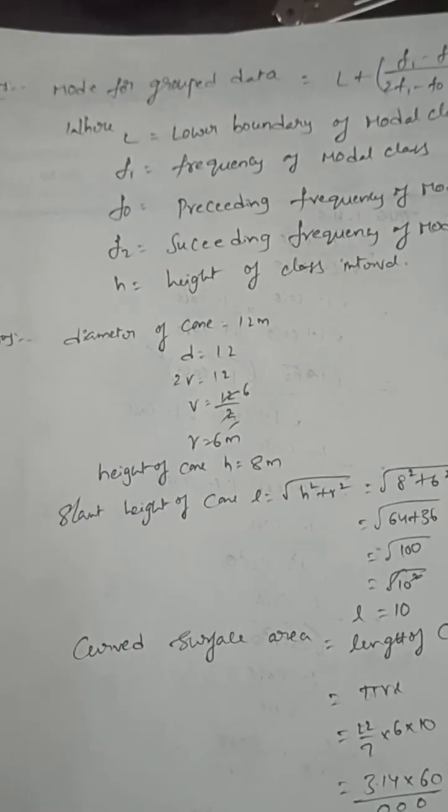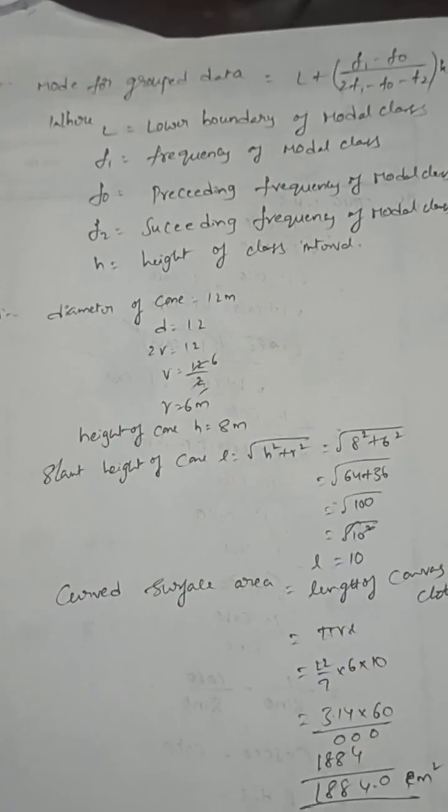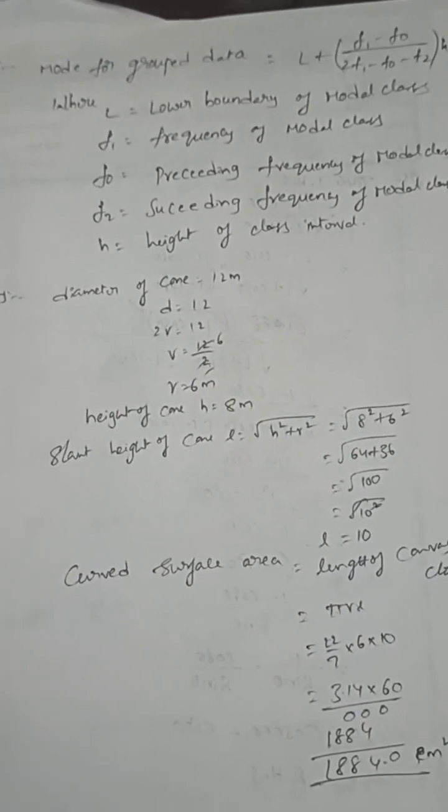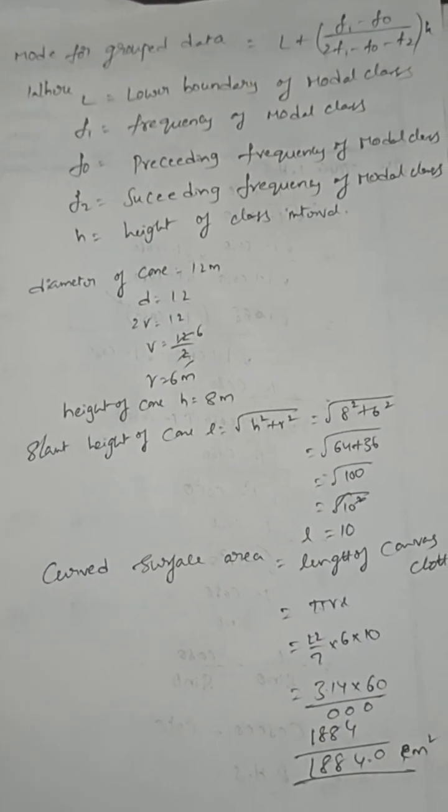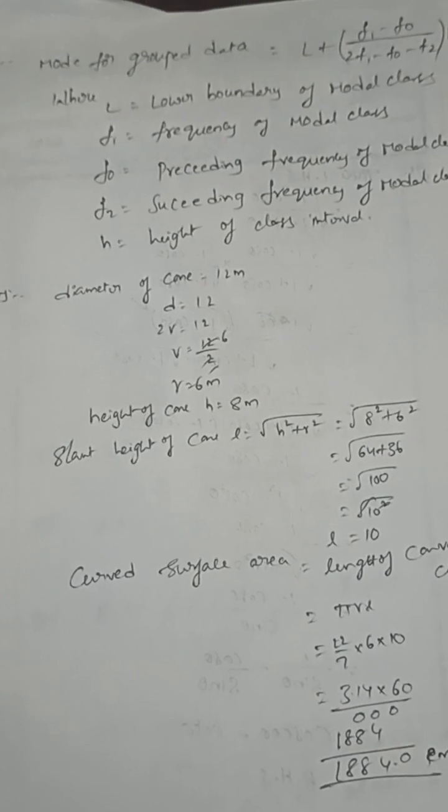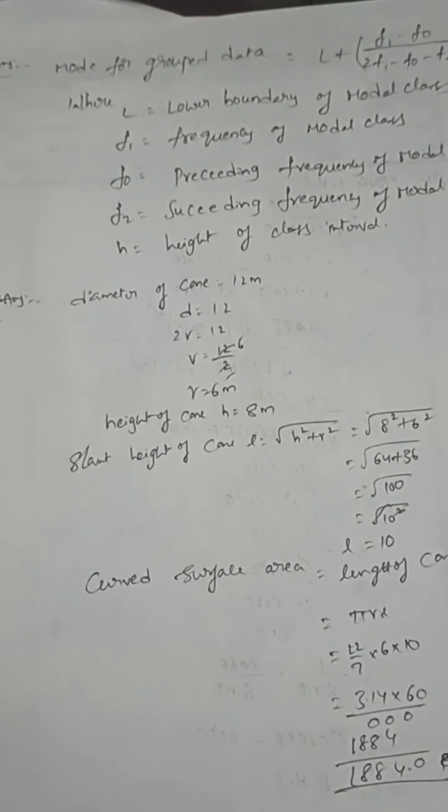Mode of the grouped data: Mode = L + ((F₁ - F₀)/(2F₁ - F₀ - F₂)) × H. L is lower limit of modal class, F₁ is frequency of modal class interval, F₀ is preceding frequency of modal class interval, F₂ is exceeding frequency of modal class interval, H is height of the class interval.